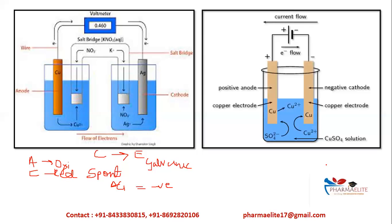Now let us look at the electrolytic cell. The basic difference here is that it consists of only one container — both electrodes are placed in one container and connected by an external source, a battery. There is no salt bridge. In an electrolytic cell, the anode is positive and the cathode is negative. Copper at the anode is getting oxidized, meaning it loses electrons — so the anode is positive.